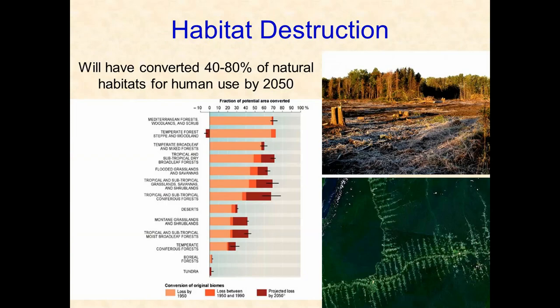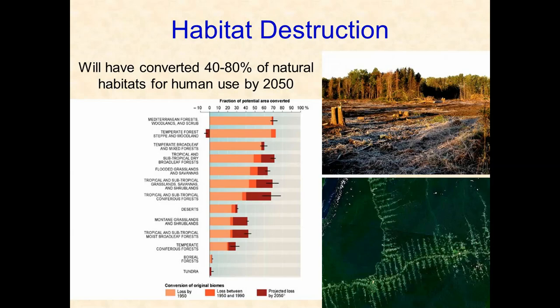Here is the scale of habitat destruction. Looking at different biomes, Mediterranean forests have had almost 70% of their natural ecosystem converted for human habitation. The bottom picture shows the Brazilian rainforest, where the light cleared areas grow larger every year while dark green vegetated areas shrink. Based on current numbers, by 2050 we will have converted somewhere between 40 and 80% of all natural biomes for human use.